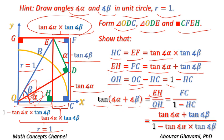Replace OH and EH from the above equations to find the tangent of addition of two angles based on tangent of individual angles.